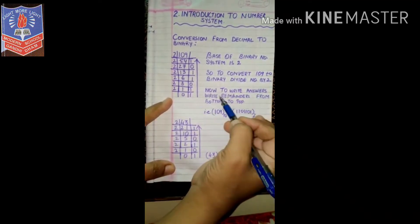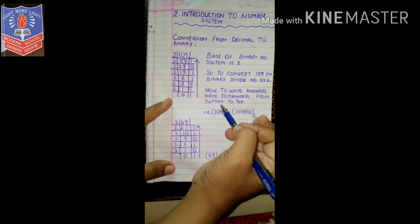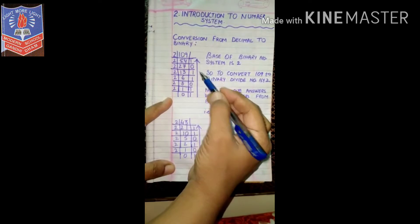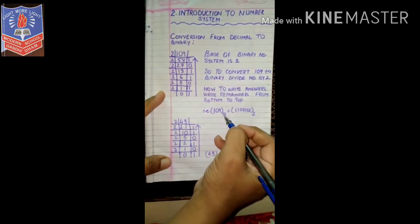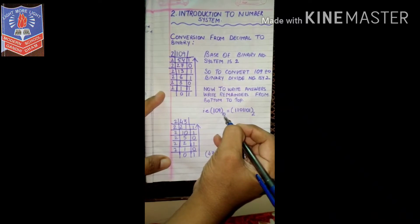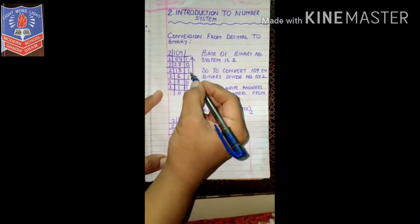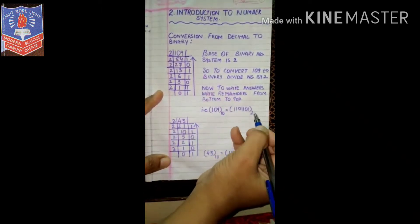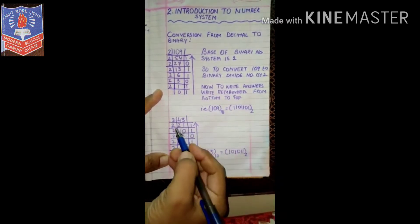Now to write the answer, we will write remainders from bottom to top — that's why I put an arrow here. So 109 base 10 is equal to 1101101 base 2, because the binary number system's base is 2.